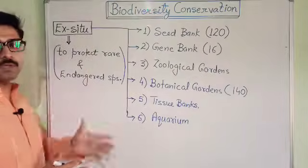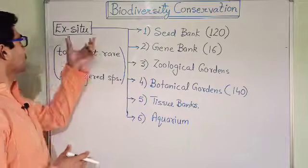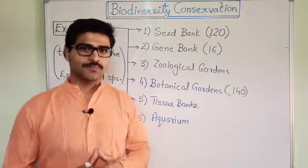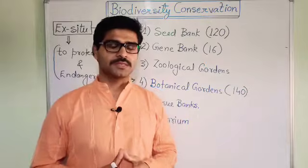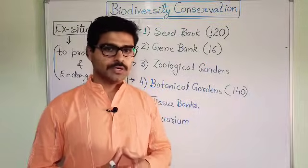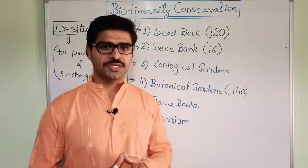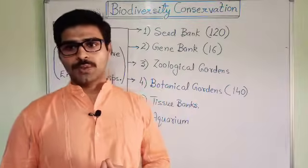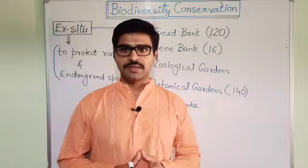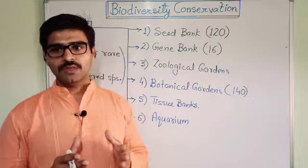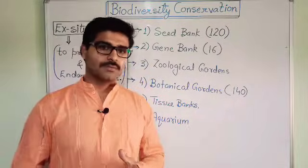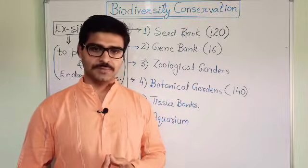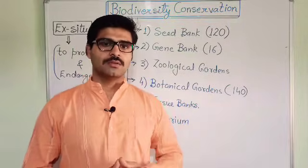Now the second approach for biodiversity conservation is ex-situ biodiversity conservation. This means artificial practices adopted by different organizations and government bodies to protect biodiversity, including species of plants and animals. In this approach, protection is given to endangered and rare species in a man-made habitat. For example, zoological gardens, botanical gardens, gene banks, seed banks, tissue banks, and other facilities like aquariums.